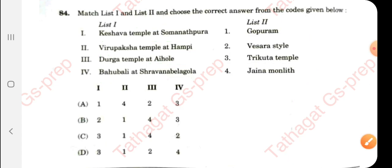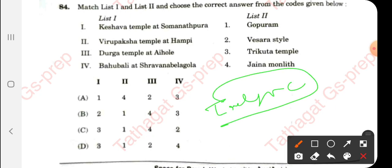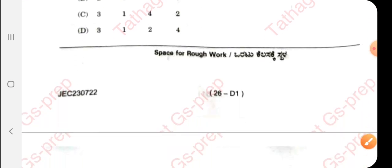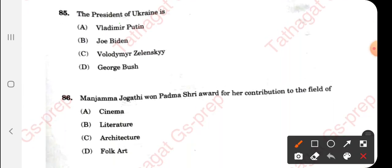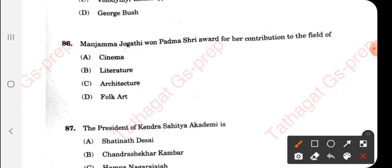If you want a PDF, you can find it on our Tathaga JSP Telegram channel — go there and download the PDF and go through all the questions in detail. Question 85: Who is the president of Ukraine? It is Volodymyr Zelenskyy. Next is a current affairs question.